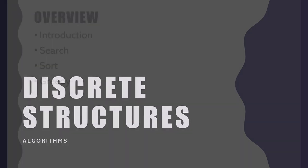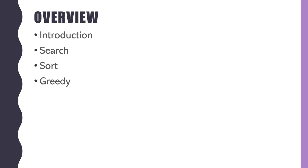We'll get an introduction to what an algorithm is, look at search algorithms and sorting algorithms, and then what's known as a greedy algorithm. I'll specifically be talking about a sorting algorithm you don't use in 2420 — the bubble sort. We'll also talk about greedy algorithms, since those who cover 2420 don't spend a lot of time on greedy algorithms either.